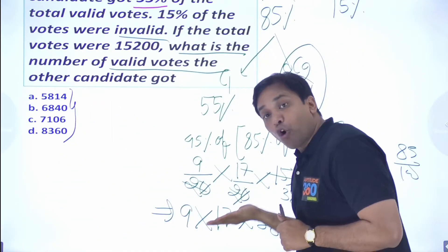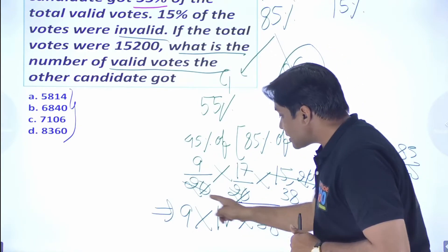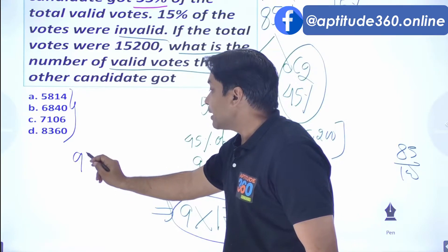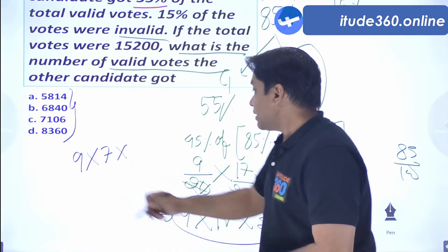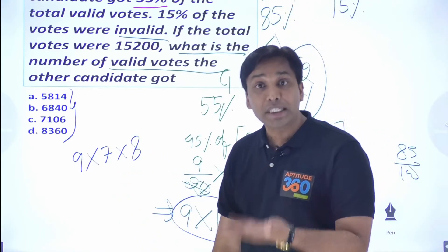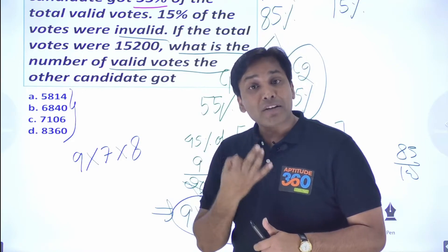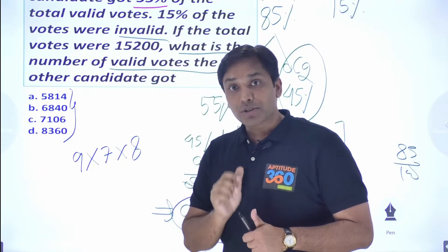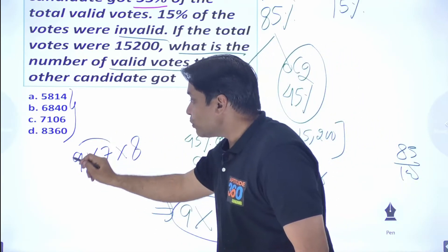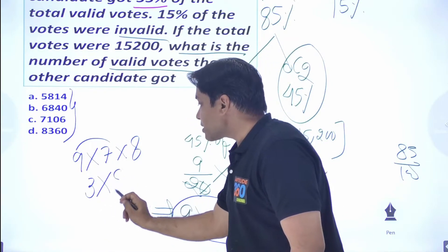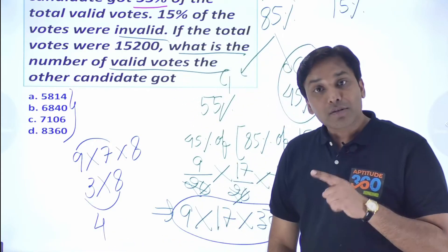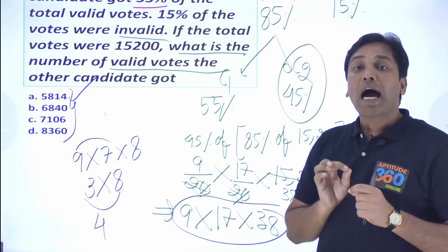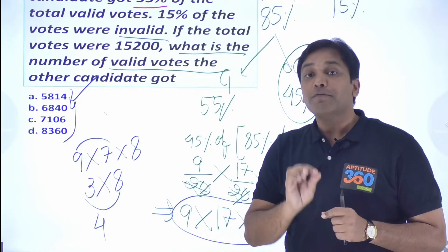The last digit of the answer must be 4. Check your options — only one answer ends in 4, so the problem is solved without completing full multiplication. This last-digit technique is covered in detail in the Number System series — three videos are available there to help you master it.